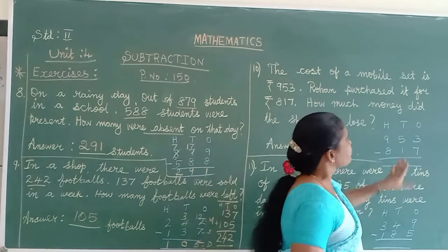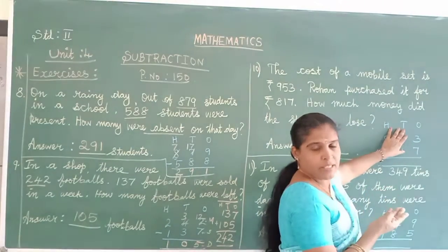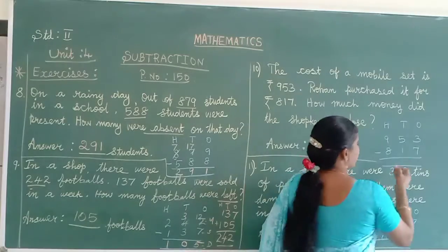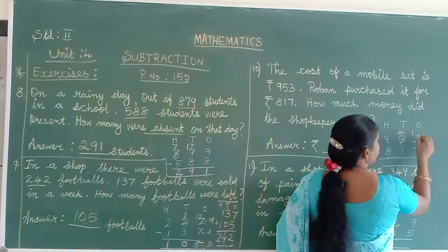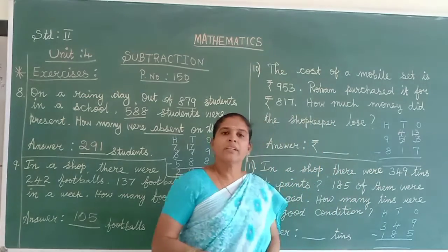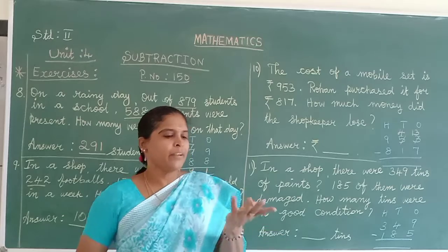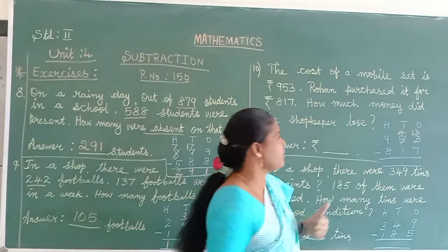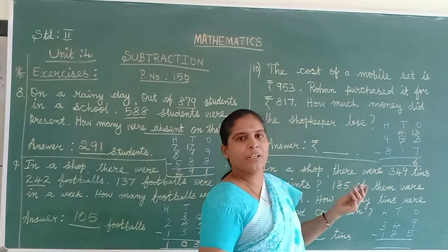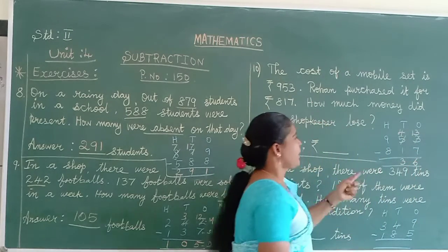Make ones column, tens column, hundreds column. Cost of a mobile 953, and Rohan purchased it for 817. So how much amount did the shopkeeper lose or did Rohan get the profit? Do the checking: 3 and 7. 7 is the bigger number on the bottom, smaller number on top. Means we should do borrowing. Cross it and write there. 13 minus 7. Do it in the mind, 7 on your finger. Before 13: 12, 11, 10, 9, 8, 7, 6. And 4 and 1, bigger number on top, no problem. Directly we can do the subtraction. 4 minus 1 equals 3. 9 minus 8 equals 1.